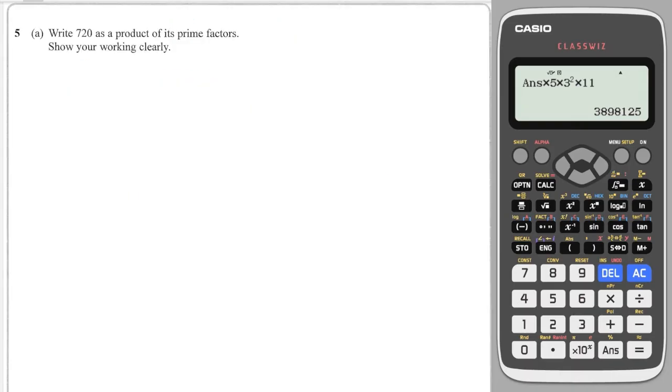Next question, we've got to write this as a product of prime factors. So rather than starting with 2, I'm going to start with 72 and 10, just to make it a little bit quicker. That's 2 and 5. 72 is 9 and 8.